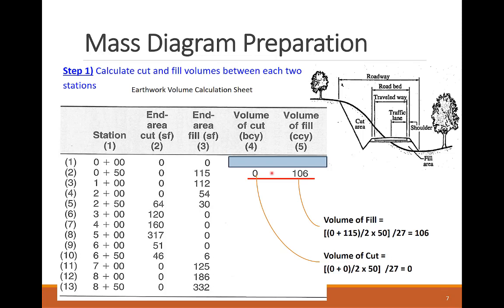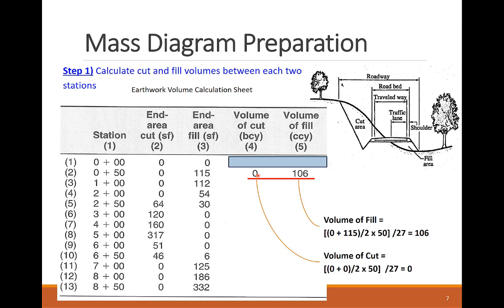The first cut volume equals zero, because both stations 1 and 2 have zero cut end areas. We continue applying the end area calculations for the rest of the station successive pairs.